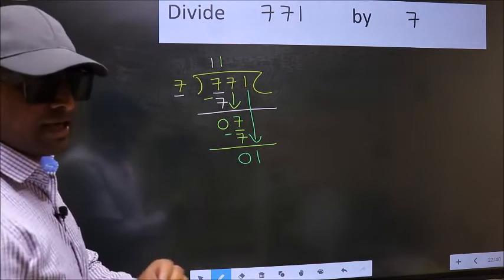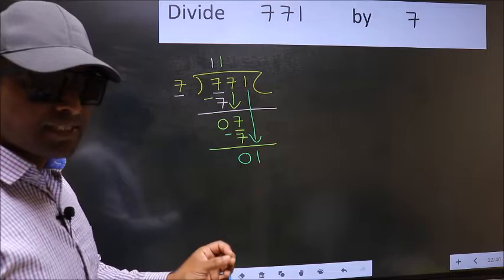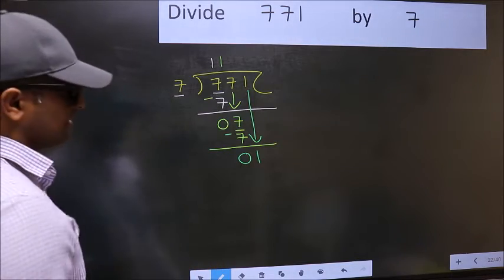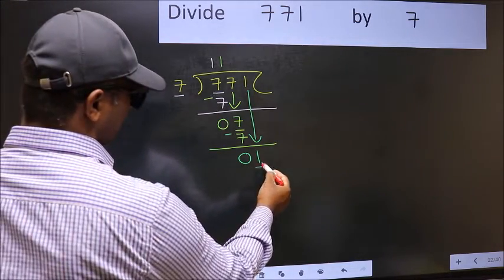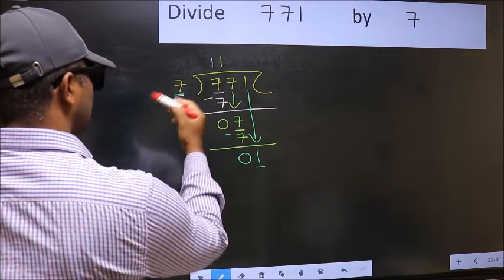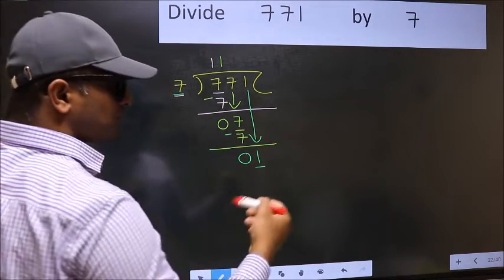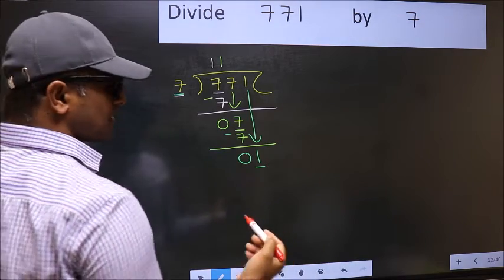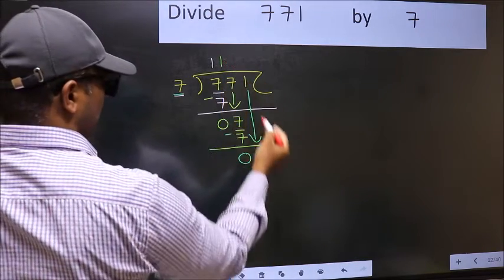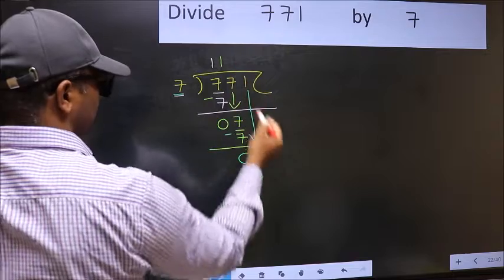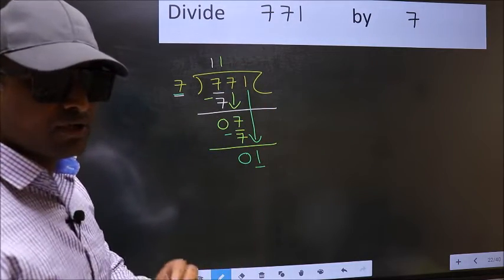the mistake happens. Here we have 1 and here 7. 1 is smaller than 7. So what many do is they directly put dot and take 0, which is wrong.